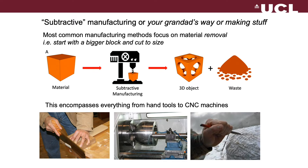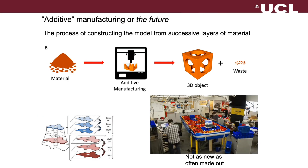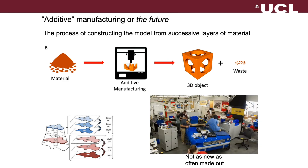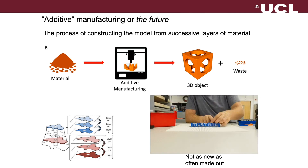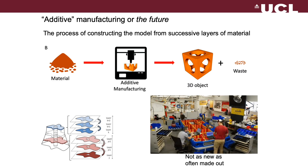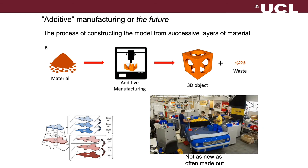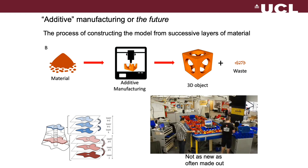I'd like to step back and think about the old ways of making things — maybe your granddad's way. You have a block of material, then you cut, drill, chisel it, or use CNC machining to get the object you want, but you have a lot of waste. The additive manufacturing technology of the future uses material as a powder or liquid, and then a 3D printer builds it layer by layer — sort of like Lego — with significantly less waste.